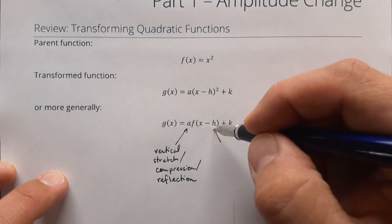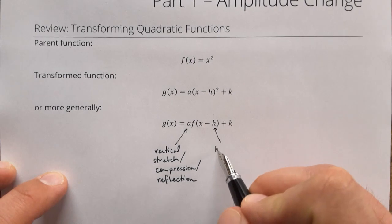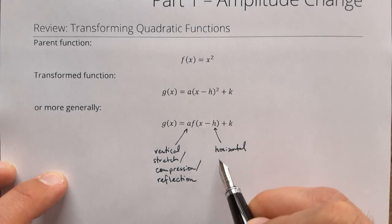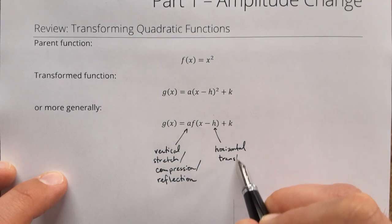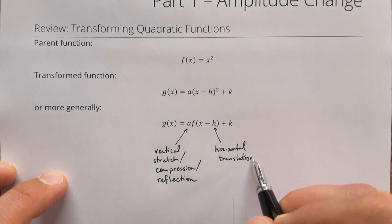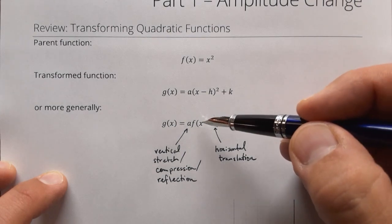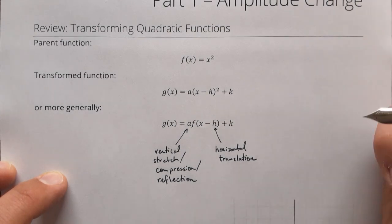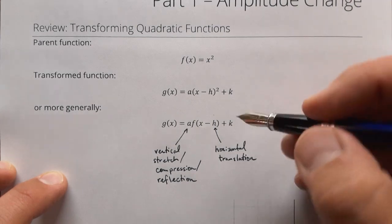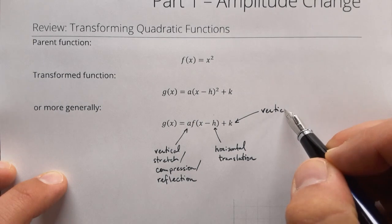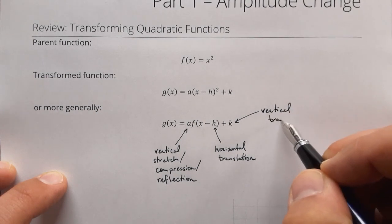The h value here is a horizontal one, and that's a translation. So sliding left or right, remember the minus sign there. If it's a left slide we would see something like x plus five would slide to the left because it's subtracting a negative value, and the last one here is also a vertical change. That is the vertical translation.